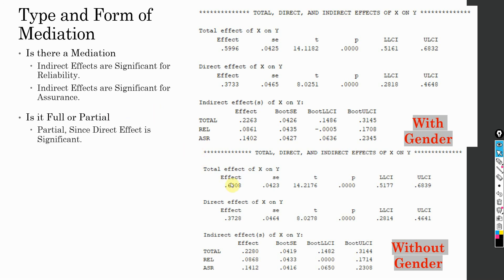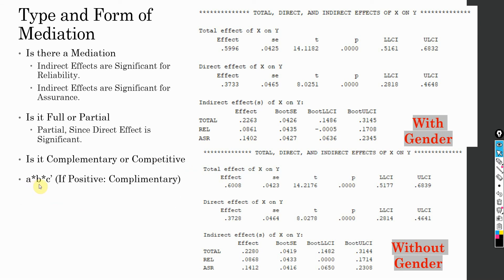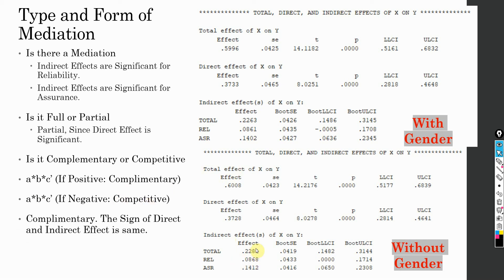Is it full or partial mediation? It is partial mediation because the direct effect of culture on commitment is significant. So some effect passes through the direct relationship and some through the mediators. Is it complementary or competitive? Multiply A1 × B1 × C' and A2 × B2 × C'. If positive, it is complementary; if negative, it is competitive. The sign of the direct and indirect effects are both positive, so this is complementary mediation.